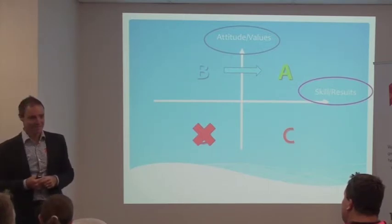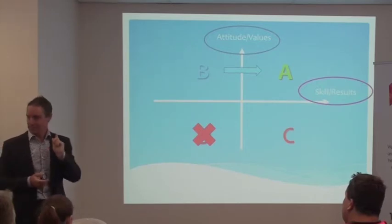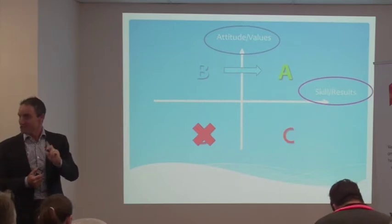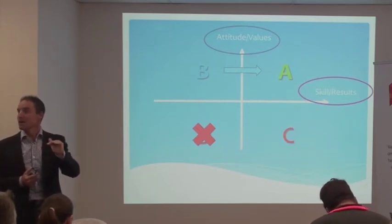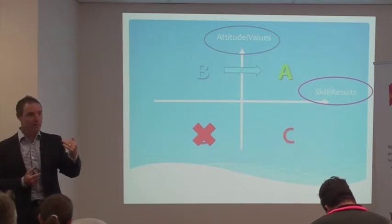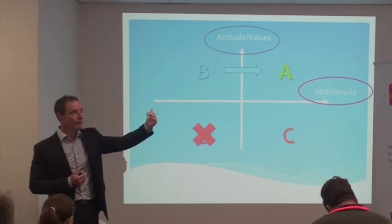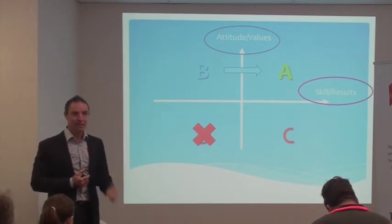It's called micromanagement. And there's one thing that C players detest, and that's micromanagement. So there are two things that will happen. They'll either recognise that they've been a pain in the backside, they'll step up, they'll apologise, and they'll recommit themselves to become an A player, or they'll leave because they cannot handle that type of micromanagement.